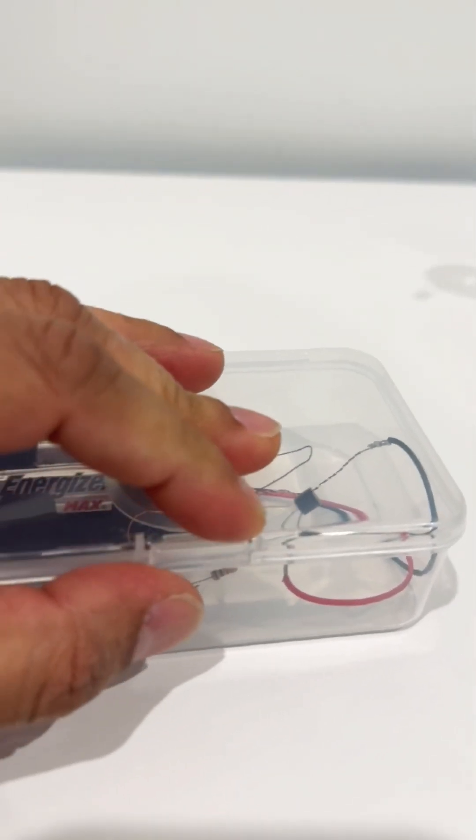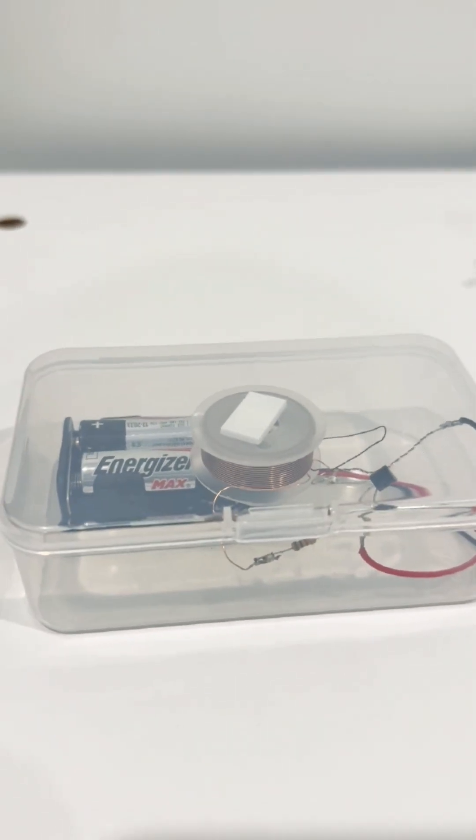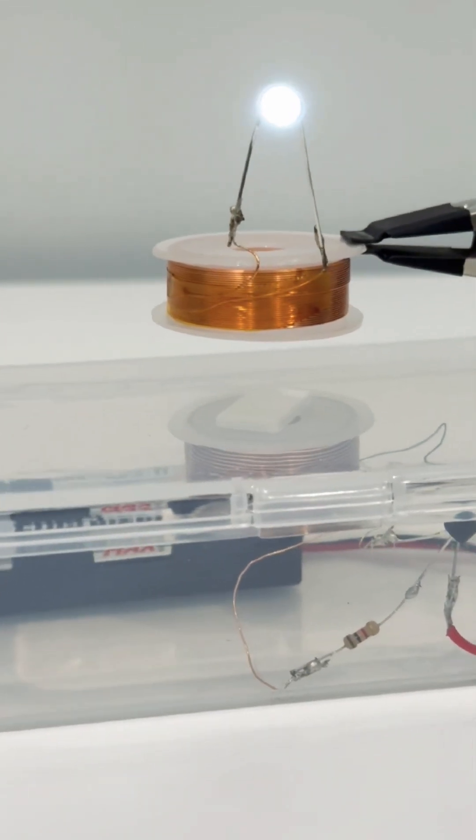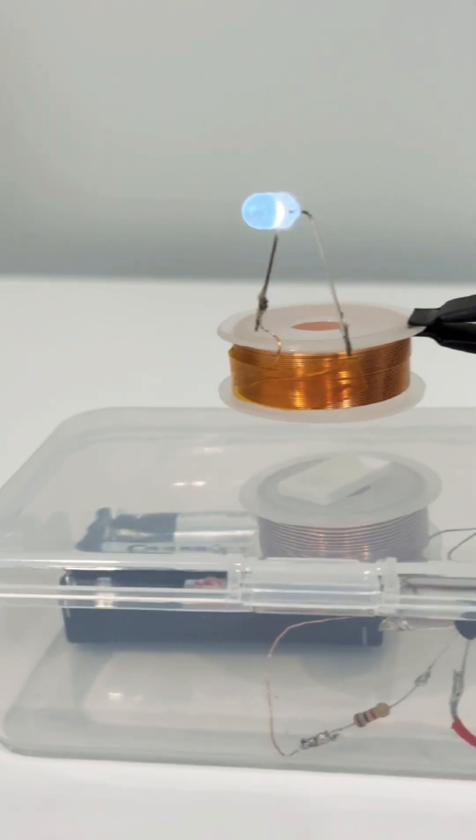And when we connect the LED to this receiver coil, it lights up wirelessly. This is the same principle used in wireless chargers, called resonant inductive coupling.